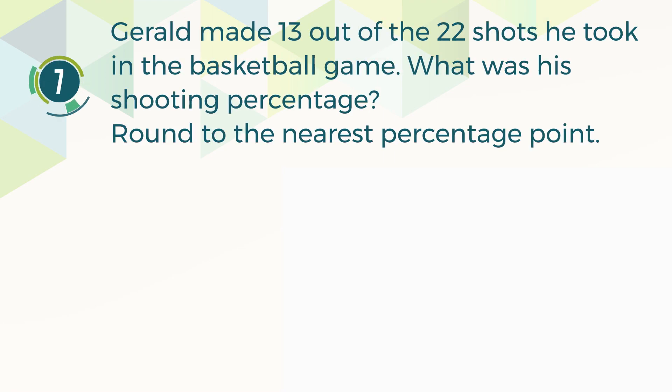Number 7. Gerald made 13 out of the 22 shots he took in the basketball game. What was his shooting percentage? Round to the nearest percentage point. A: 13%. B: 22%. C: 59%. D: 67%. The correct answer is C, 59%.